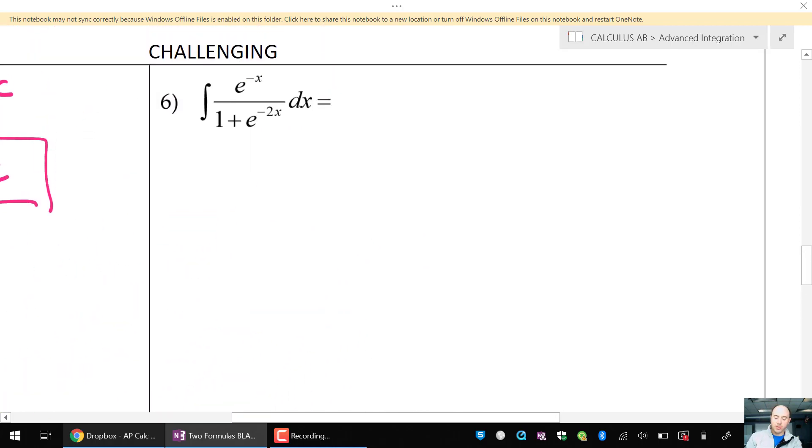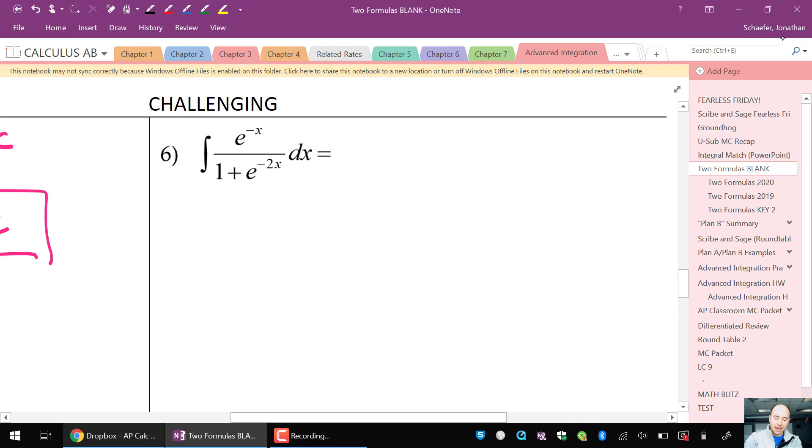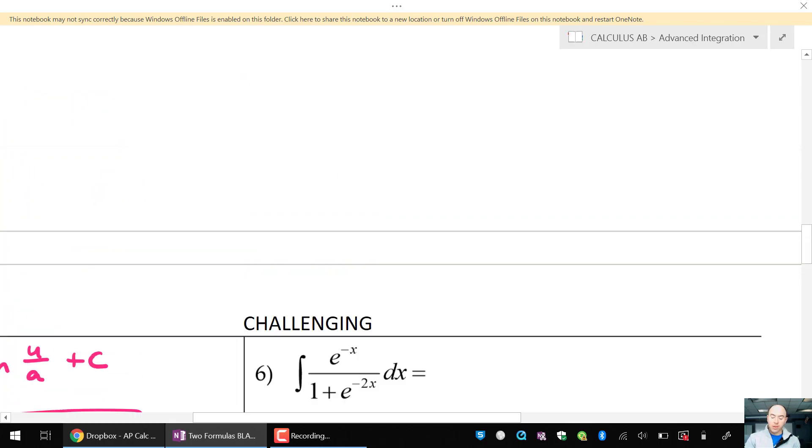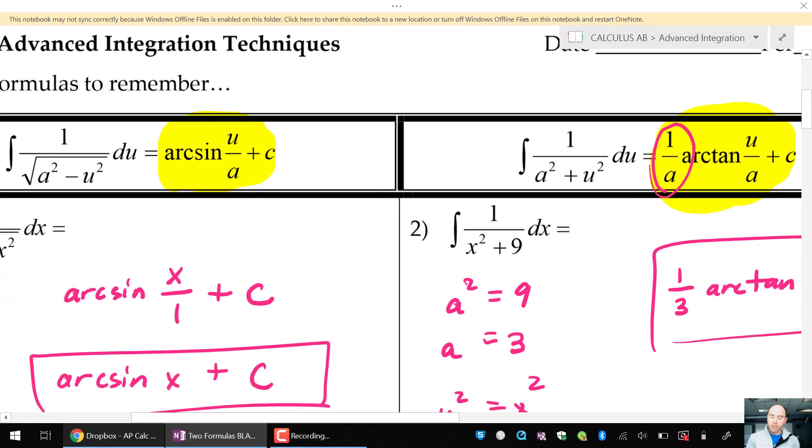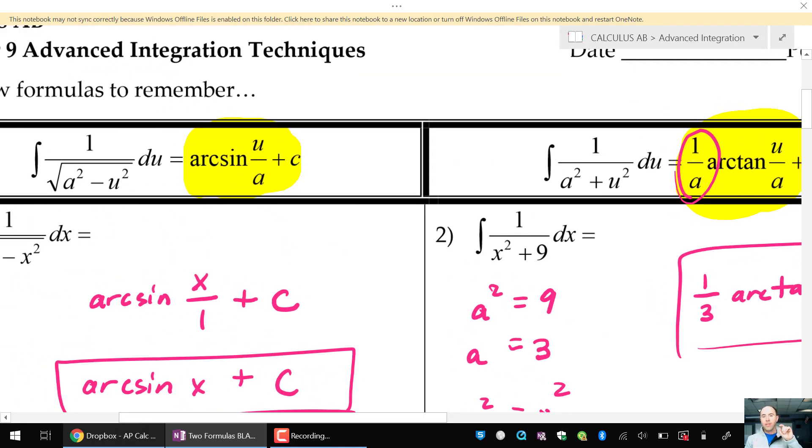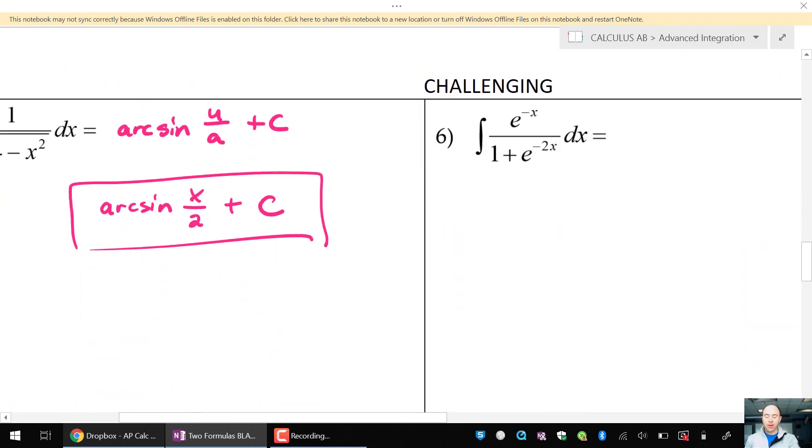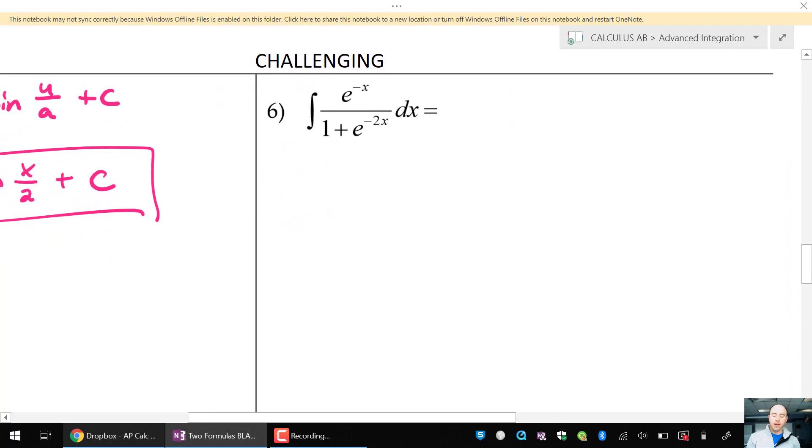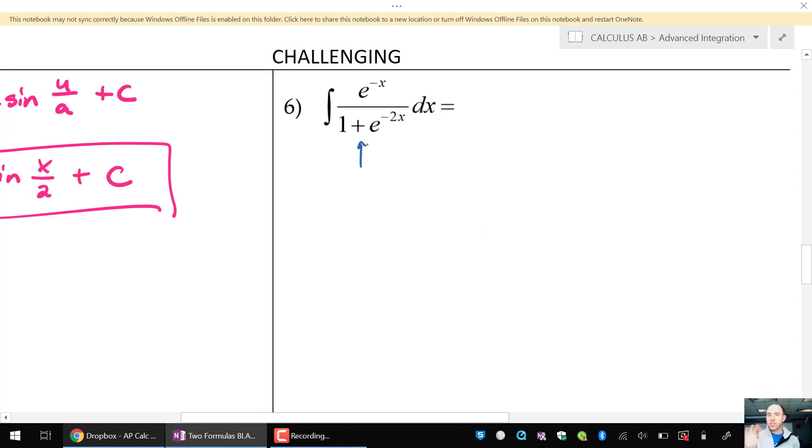And we'll close here with this challenge problem with e to the negative x. Let's see what's going to happen here. Now, again, it's maybe hard to tell if this is an arcsine or an arctangent or maybe it's something totally different. But this is actually going to be an arctangent. And it's a little misleading because if you look back at the formulas, we are only going to look for arcsine and arctangent if I have a 1 in the numerator. And what makes this challenging is I don't have a 1 in the numerator. I have a function. I have an e to the negative x. But what's going to happen here with a clever use of u substitution is I'm going to be able to manipulate this integral so that I will have a 1 in that numerator. Here's how it's going to work. But it is arctangent. There's a plus sign down there. No square root. It's going to be arctangent.